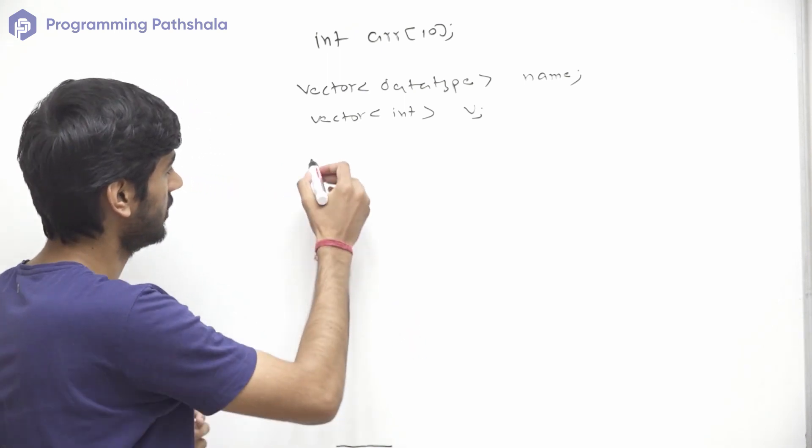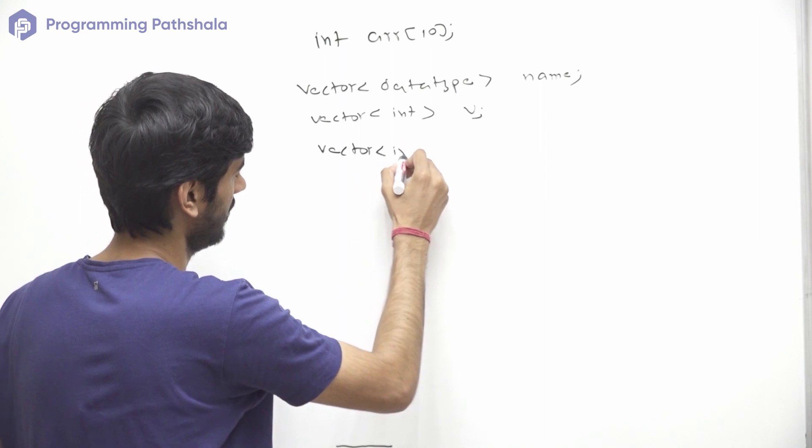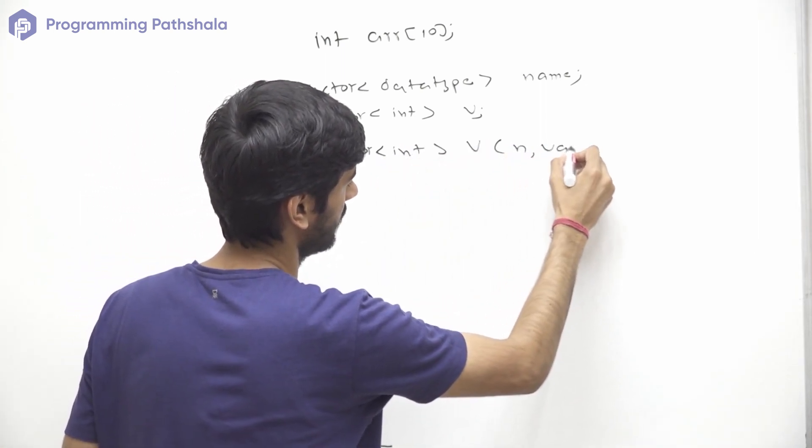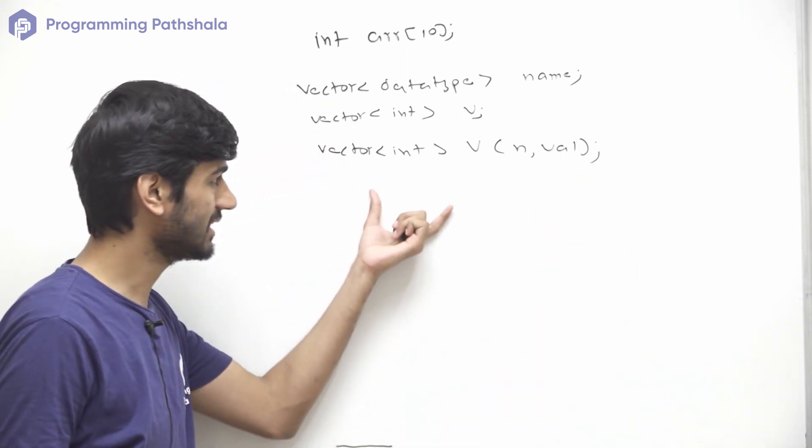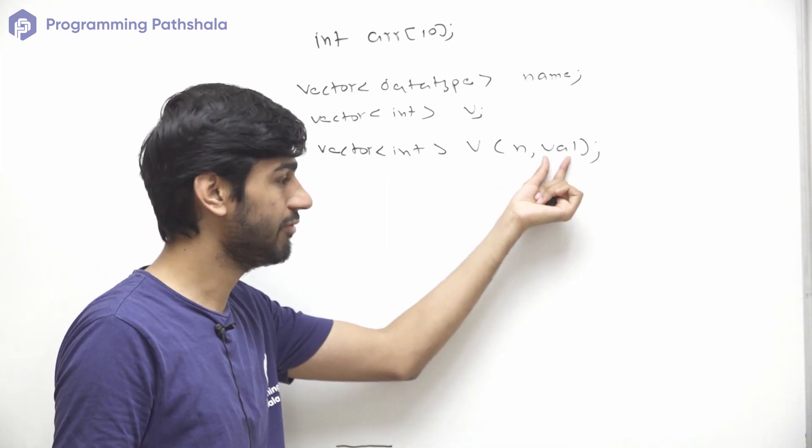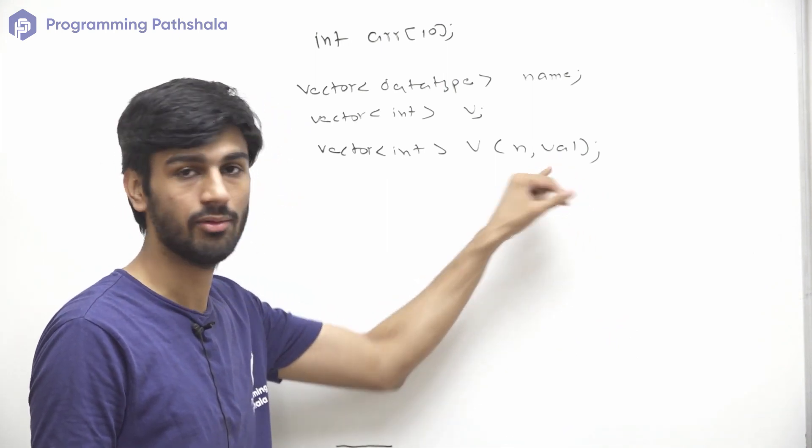This constructor will initialize a vector which is empty or we can say with size 0. Now there is one more constructor which is vector<int>, then we can provide n value. So this constructor will initialize a vector with size n and all the elements will have value equal to this variable val.